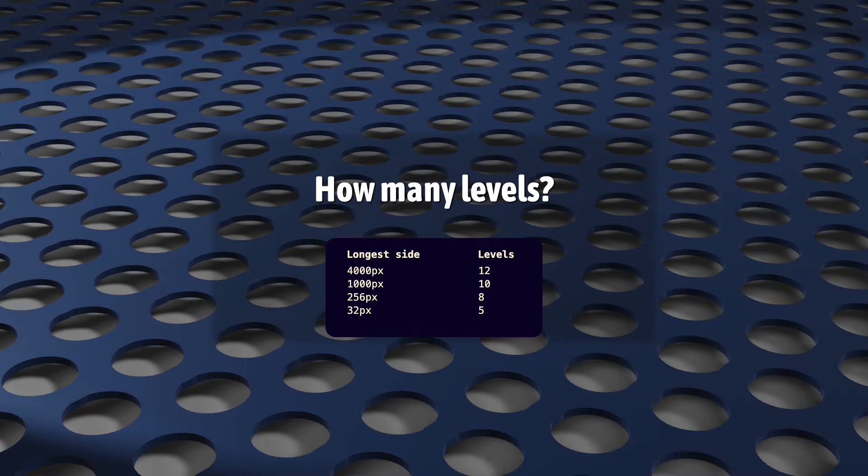A 4K image could have 12 levels, a 1K image could have 10, and a 256 by 256 image would have just 8.